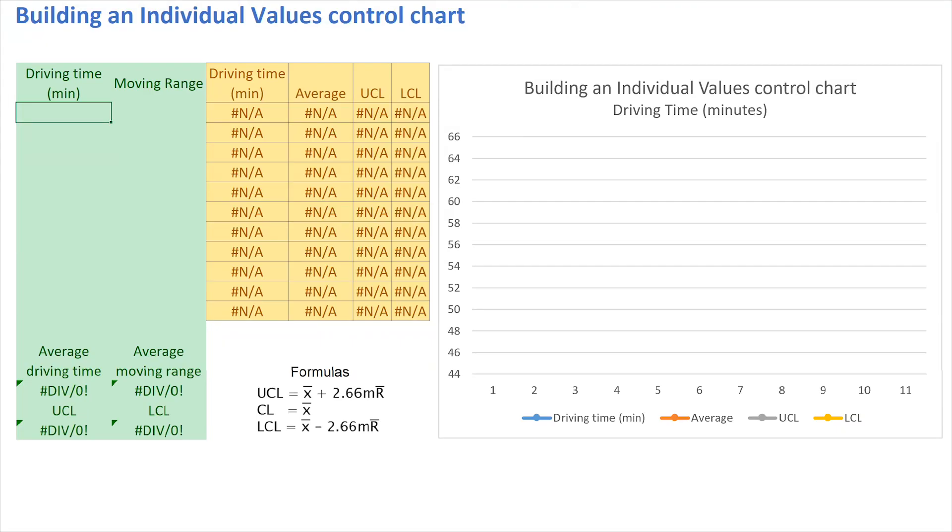This is a demonstration of how to build a control chart. In particular, we're going to be building a control chart called the individual values control chart, where you actually plot the values themselves on the control chart. There are other types of control charts that are good for plotting averages of values, but we're just going to be working with the most versatile of all charts called the individual values or XMR chart.